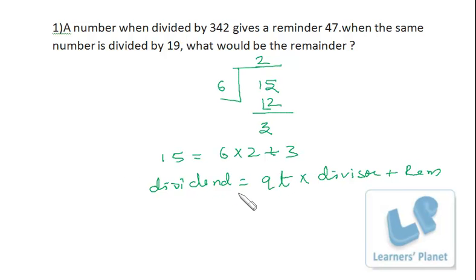That is the standard formula. Now, for this problem, I assume the number is x. When it is divided by 342, it gives a remainder 47. Since we don't have the quotient, I assume it to be q. So this is divisor times quotient plus remainder. The number x equals 342q + 47.